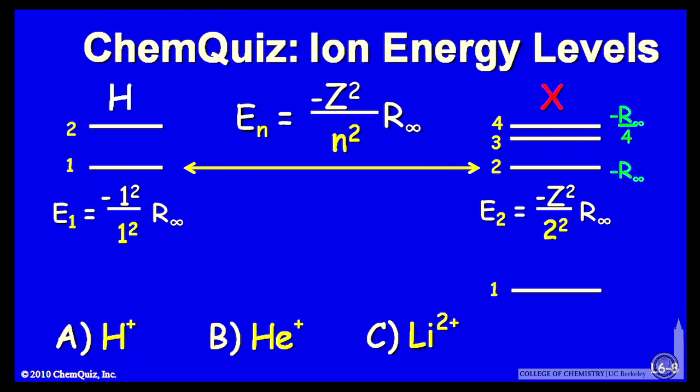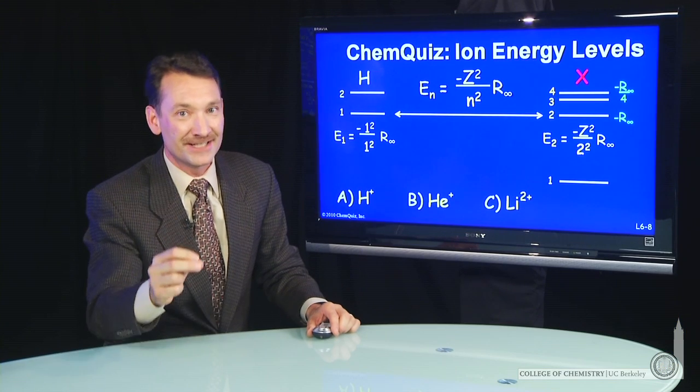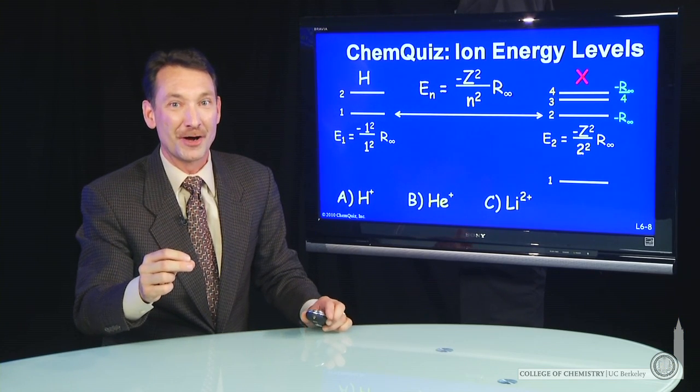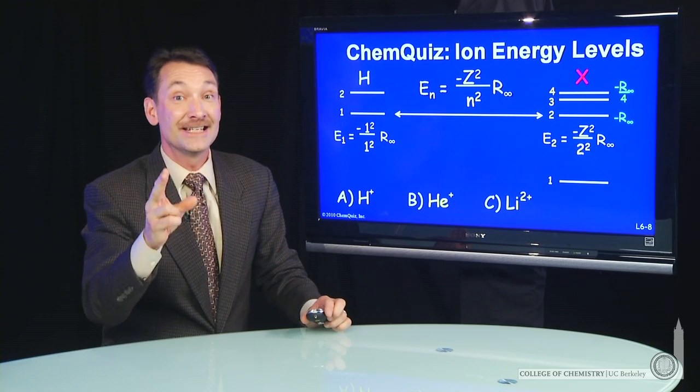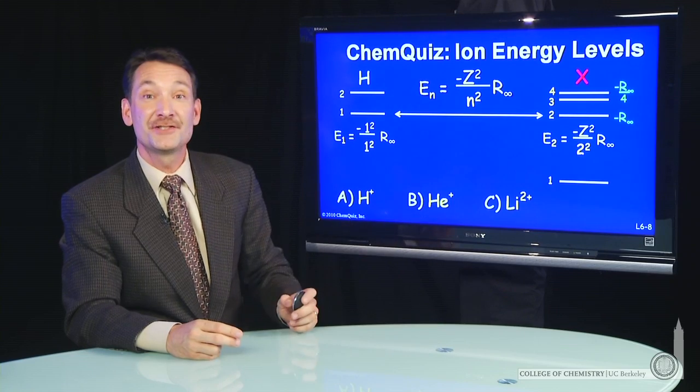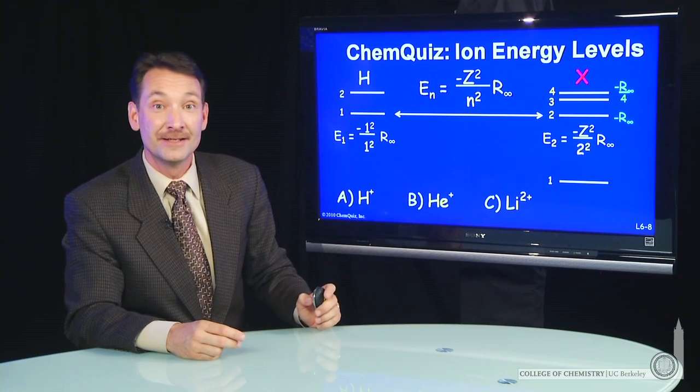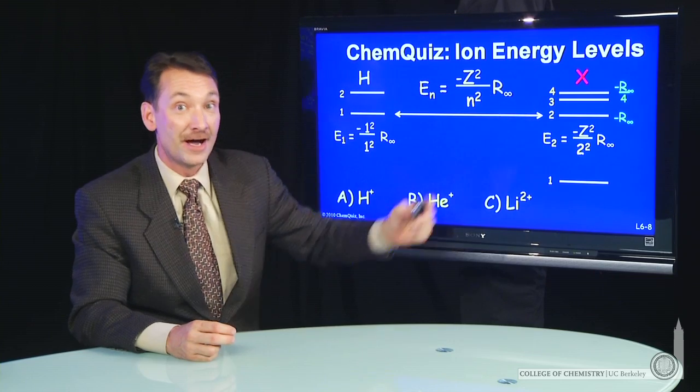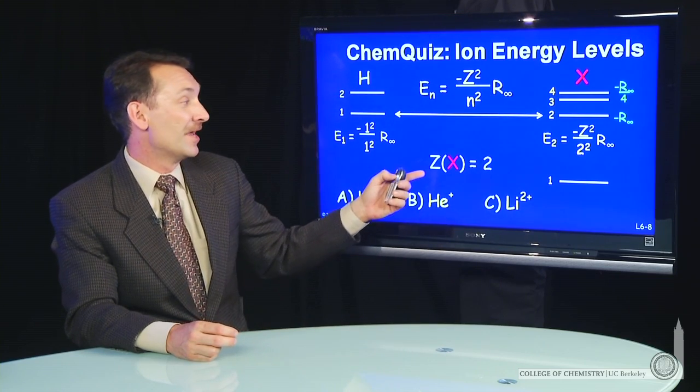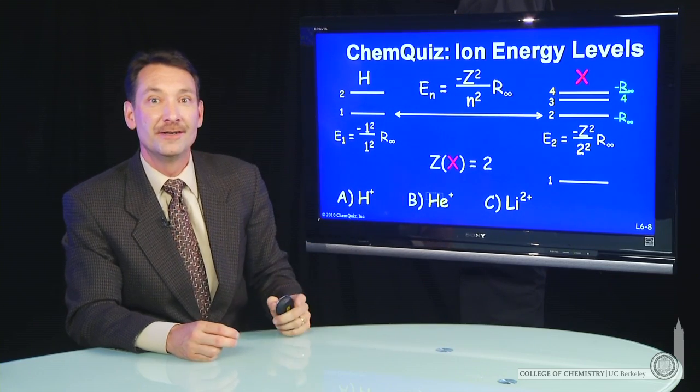Remember, once you determine the number of protons, you determine the identity of the nucleus. If it has two protons, I don't care what else it has in it—it is a helium nucleus. So helium +2 or helium+ is the ion that would have this configuration on its electronic energy scale. Z will be 2 for helium.